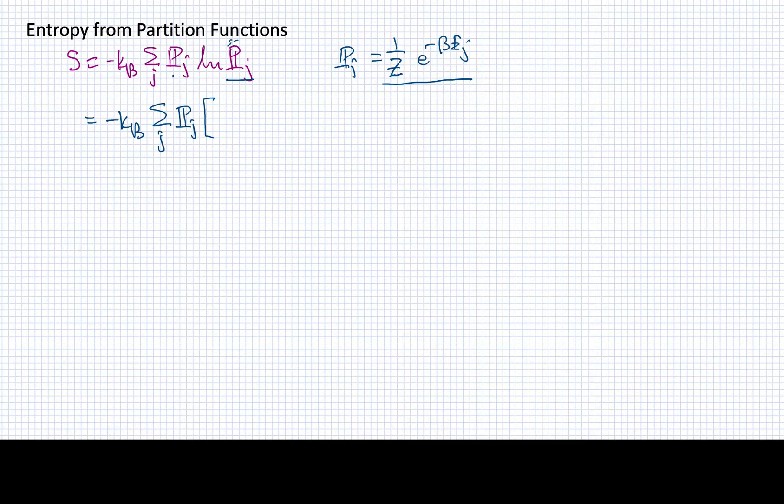I'm going to take the log of something that looks like b over a, and that's just log of b minus log of a. The b in this case is this part, and the a is this part. So I'll have the log of e to the minus beta ej, so I'll have minus beta ej. And the z is the denominator part, so I'll have minus log of z.